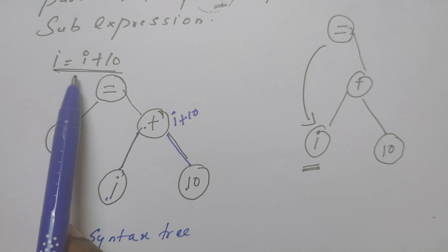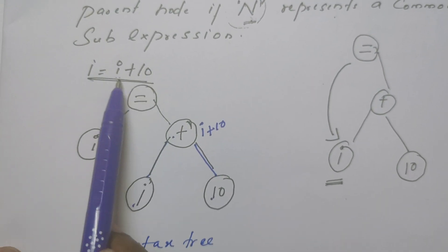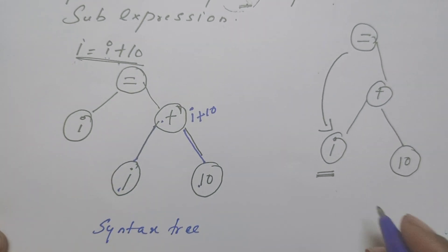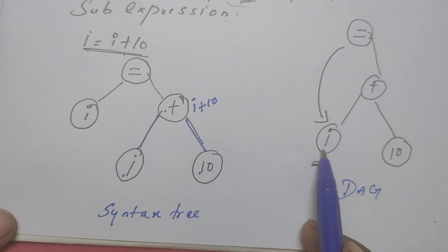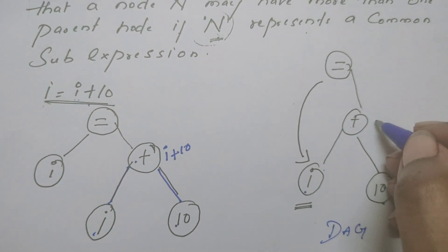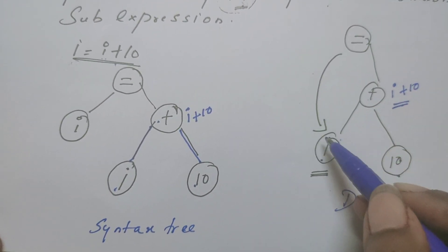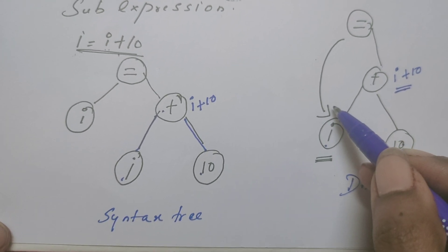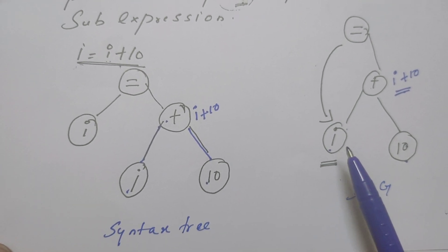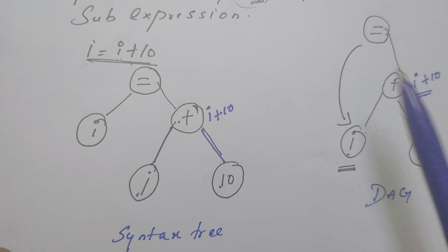Now for the same expression, I am going to construct the DAG. Before that, let us see what is a common thing available. i is a common thing - i appears more than once. i is used in the evaluation of the expression, and once the expression is evaluated, the value is assigned to i itself. In the DAG also, we have created a leaf node for i, leaf node for 10, and i plus 10 is done. The plus is represented as the interior node. The result of this expression is being assigned to i itself. I have not created i one more time - the same i node is used to refer. So the common sub-expression here is i. i has more than one parent: one of the parents is plus, another one is equal to.